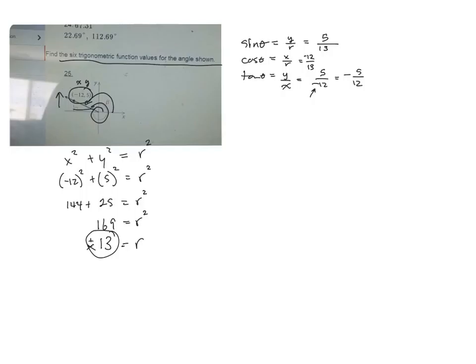And the x, because I'm going to the left here, is negative. So it would be negative. So those are three of the trig ratios.